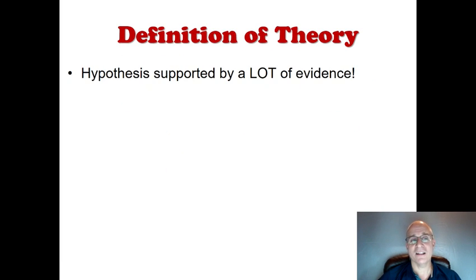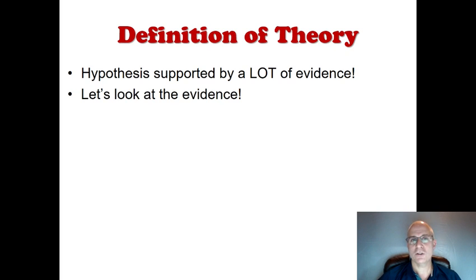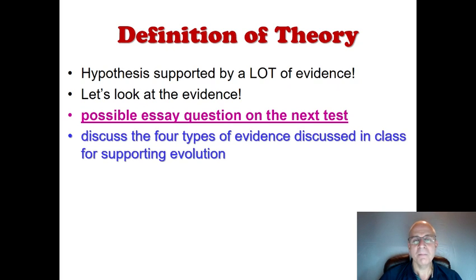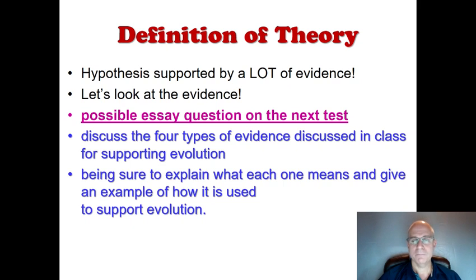A theory is an important thing — we can call it a hypothesis that's supported by a lot of evidence. Let's look at the evidence for supporting this theory of evolution. Please be aware this is another possible essay question for the next test. The question might ask you to discuss the four types of evidence for supporting evolution. Make sure you can explain what each one of these terms means and give an example of how it's used to support evolution.